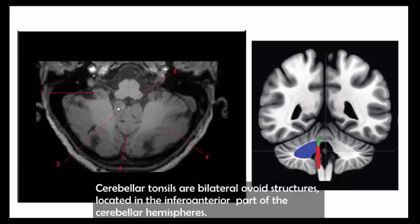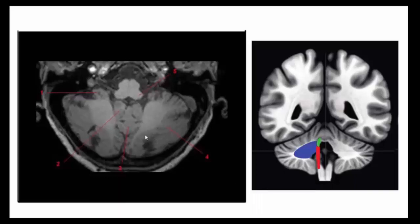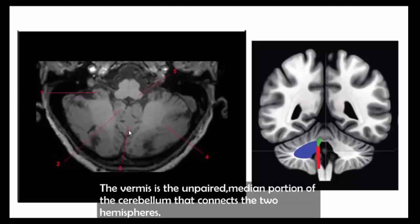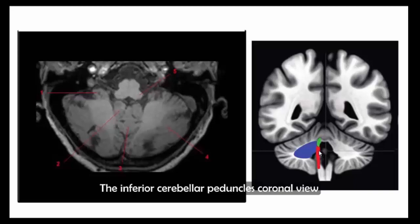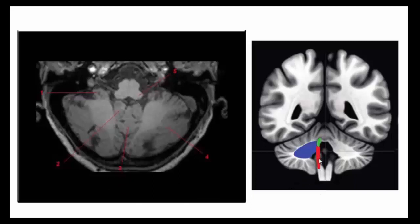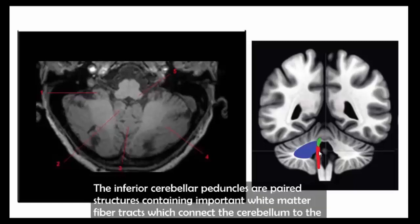This is the vermis. The vermis is the unpaired median portion of the cerebellum that connects the two cerebellar hemispheres. This is the inferior cerebellar peduncle on axial view and coronal view. The inferior cerebellar peduncles are paired structures containing important white matter fiber tracts which connect the cerebellum to the medulla.